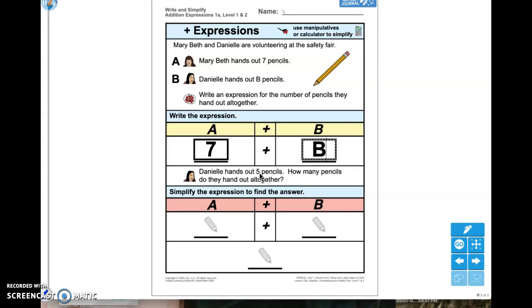So Danielle hands out five pencils. We now know what the value of B is. How many pencils do they hand out all together? Again, this all together is telling us that we are adding. Here's my plus sign. A hasn't changed. So we're going to add, we're going to move it from here down. So our A is still 7. That has not changed. Mary Beth hands out seven pencils. We wrote it here and here. So B, we didn't know what B was up here. Now we know. Danielle hands out five pencils. So now we're going to fill this B in with five. The last thing we need to do is add these together. Seven plus five.